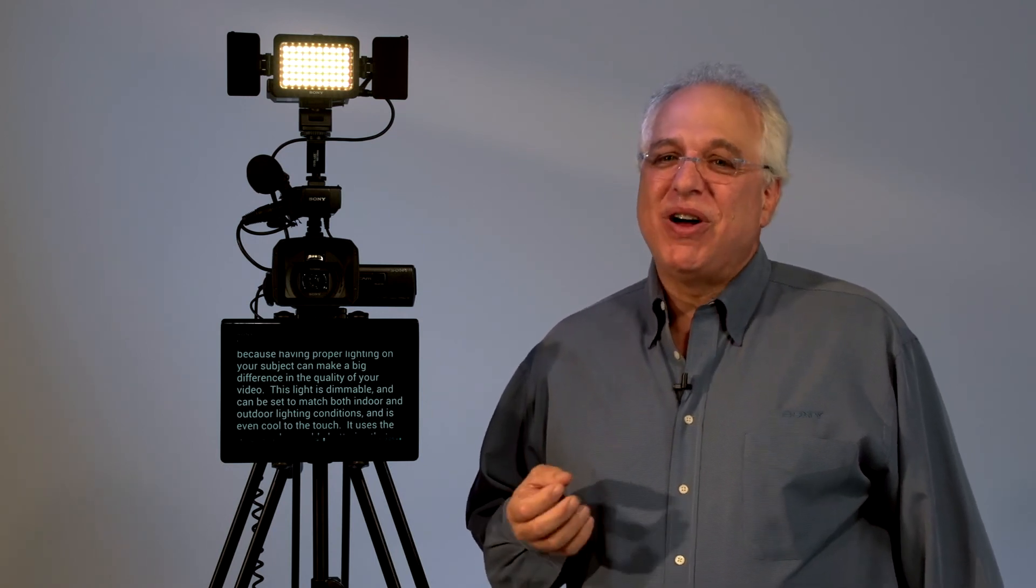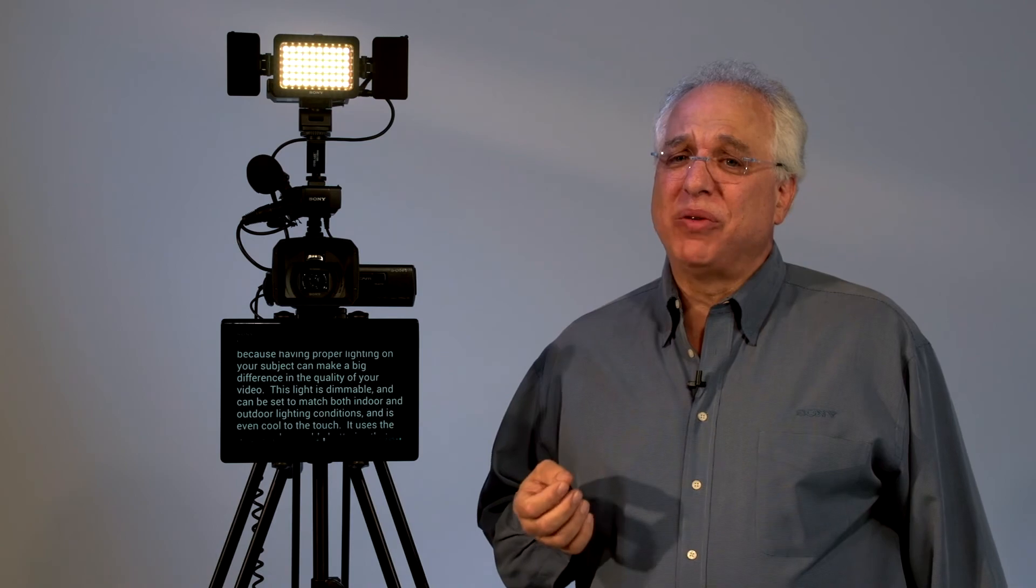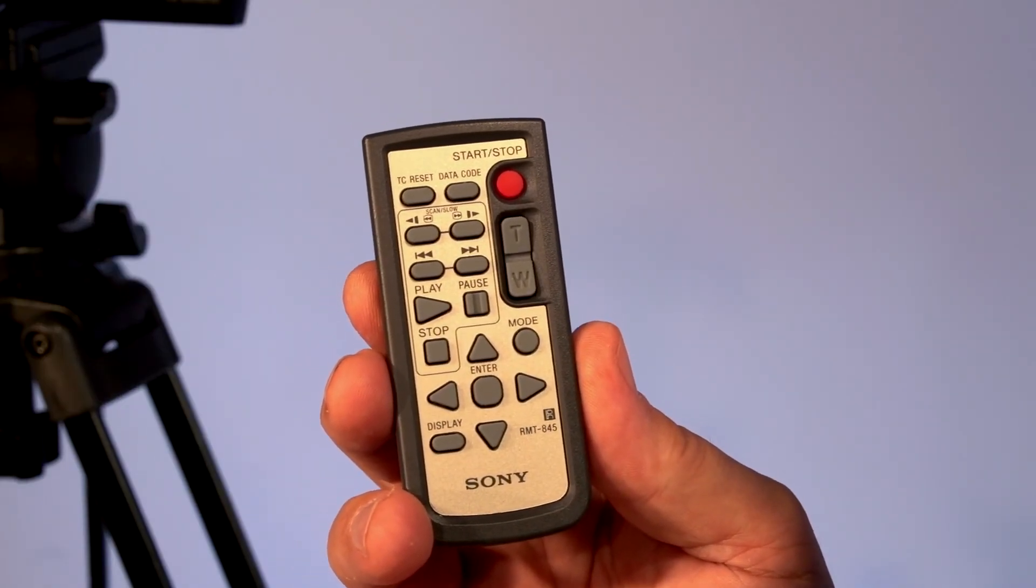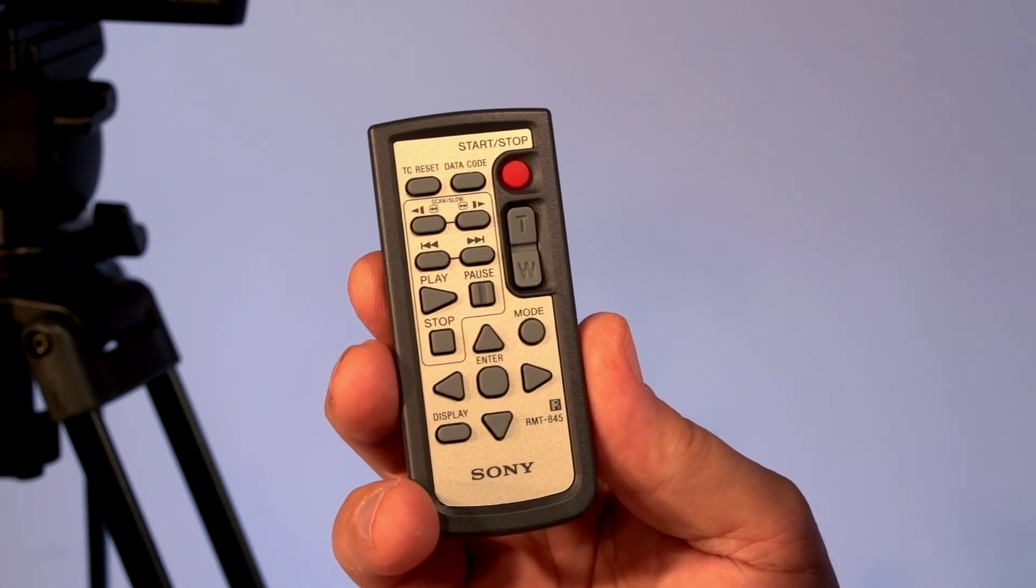The NX30 also comes with a small wireless remote control, which can be very useful for controlling zoom settings, and allows for framing a presentation shot and starting recording while using the system in a single-person talent and operator reporter mode. Very handy.